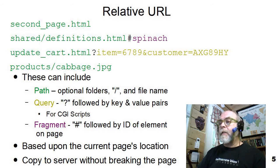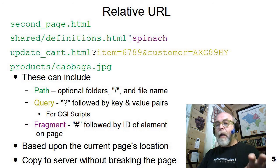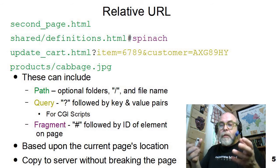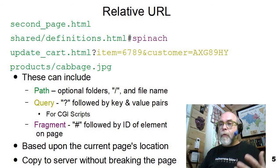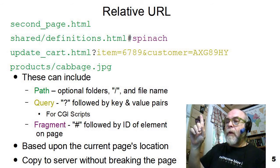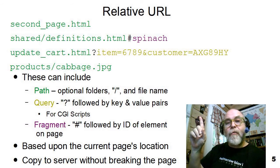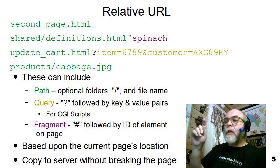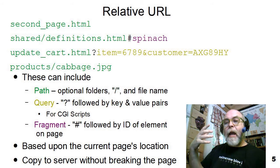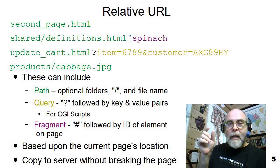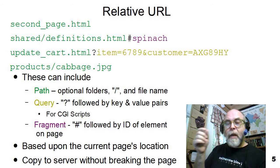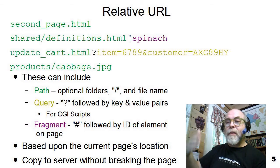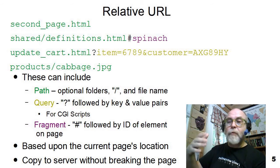Another example is products/cabbage.jpeg — that says go to a subfolder called products and find a picture called cabbage.jpeg. A second relative URL contains a fragment: pound spinach. What that says is load the definitions page, find the HTML tag with the ID of spinach, and automatically scroll to that point. If you wanted to jump within the same page, you could just use a URL of pound spinach, and it would jump within the same page without loading another page.